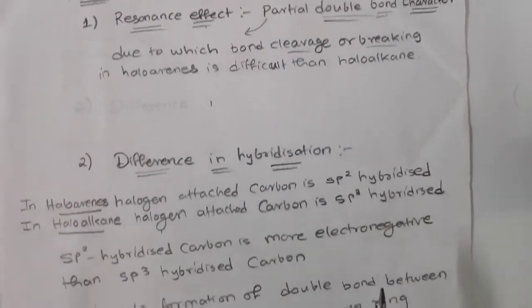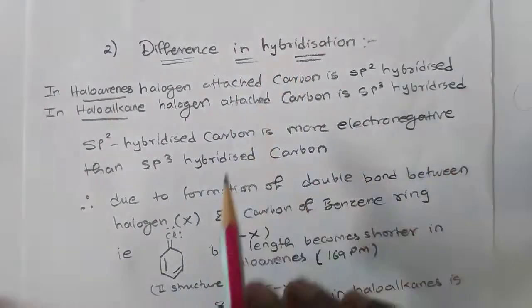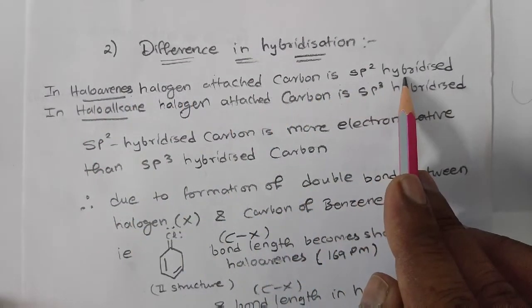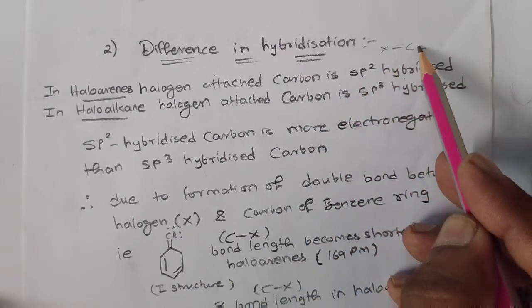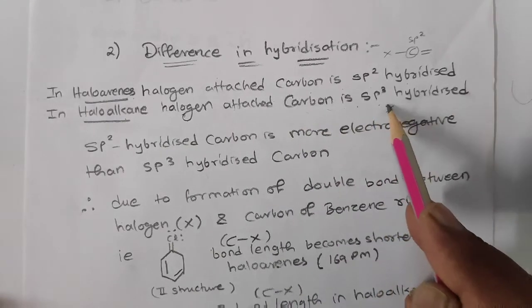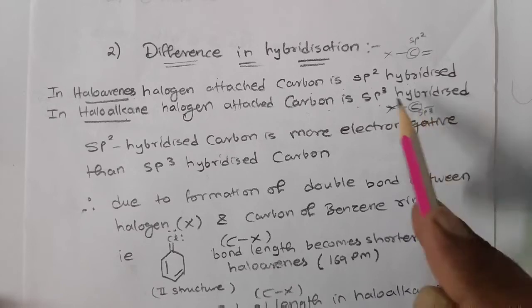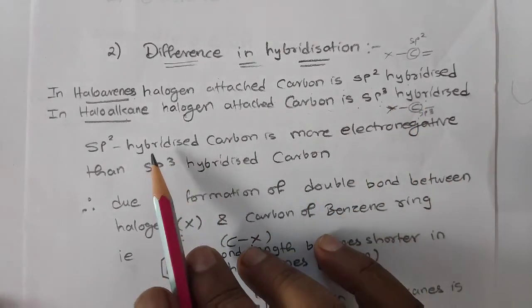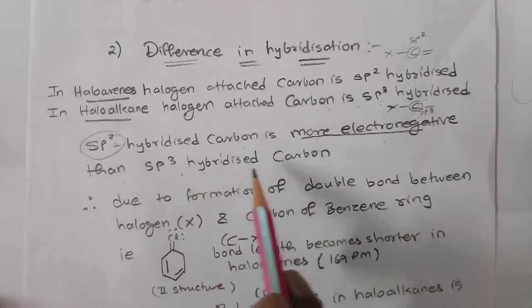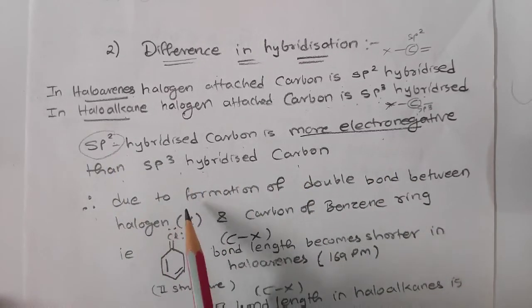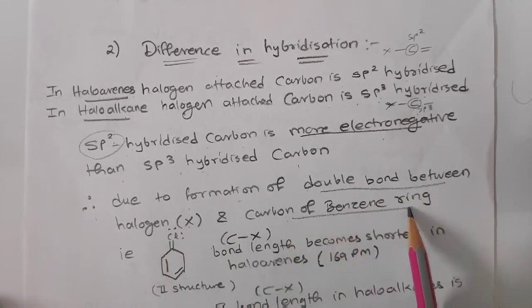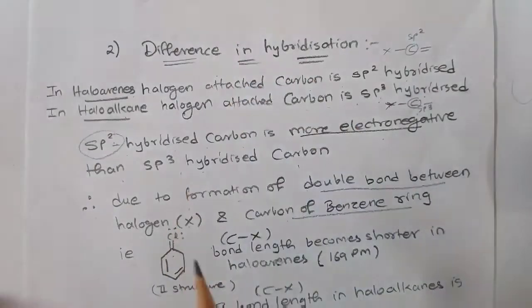The second reason is difference in hybridization. In haloarenes, the halogen-attached carbon is sp2 hybridized — that is, the halogen is attached to a carbon that is part of a double bond, making it sp2 hybridized. An sp2 hybridized carbon is more electronegative than an sp3 hybridized carbon. Due to this, there is again formation of a double bond between the halogen and the carbon of the benzene ring.